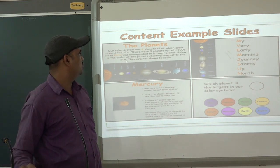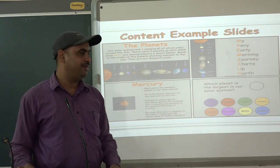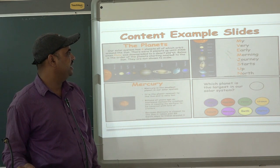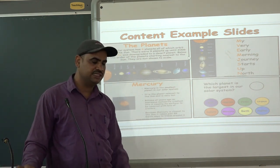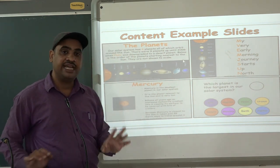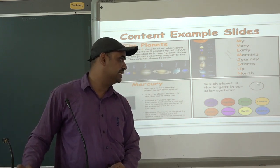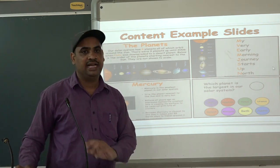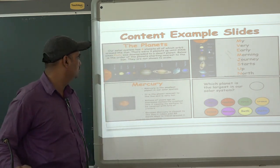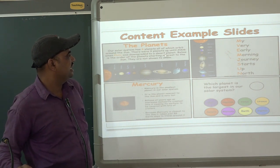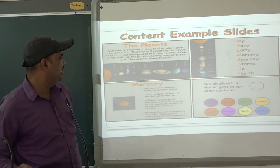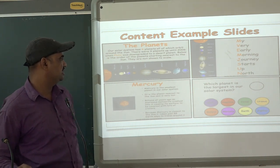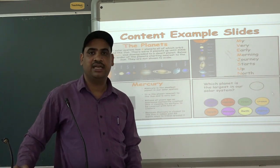Our solar system has eight planets, as we have already discussed many times. Up to 2006 there were considered to be nine planets, but now people consider only eight. Pluto is no longer considered a planet — it is considered a dwarf planet. Here is the list of the eight planets: Mercury, Venus, Earth, Mars, Jupiter, Saturn, Uranus, Neptune.